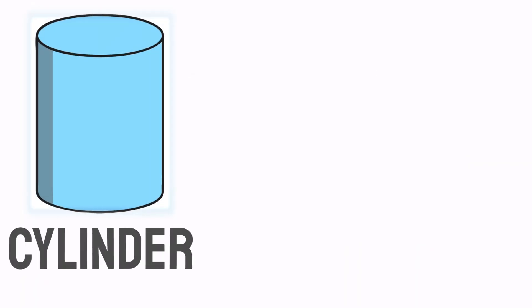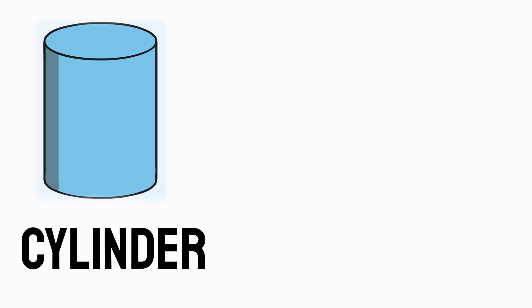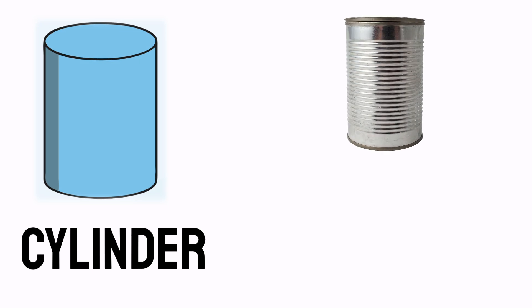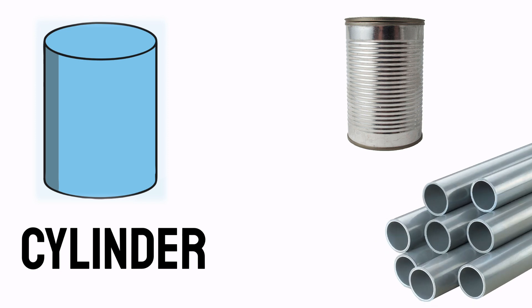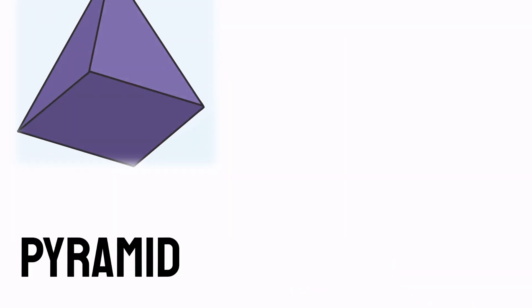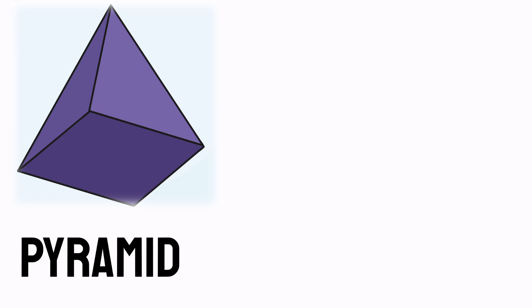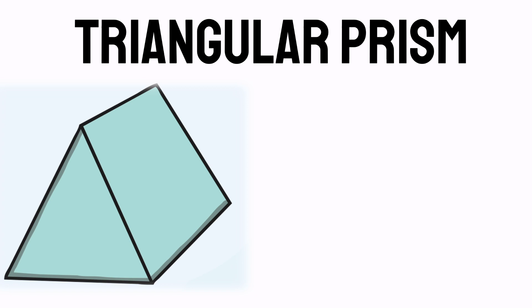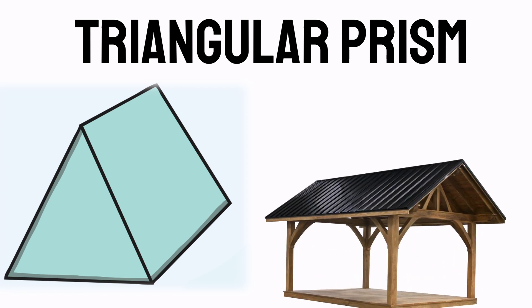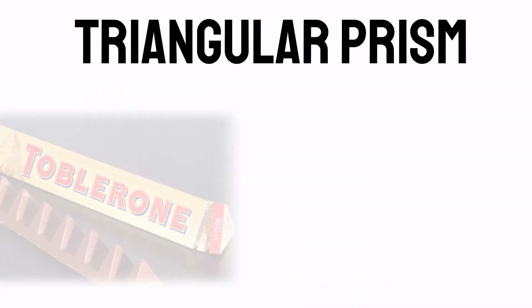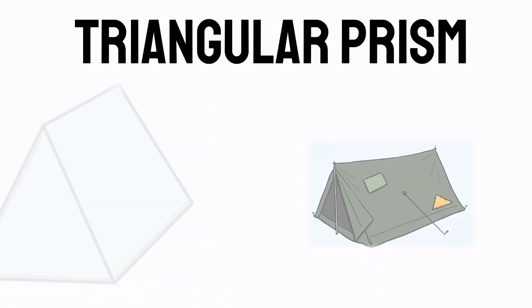Yummy! We also have cylinder. Cylinder looks just like a tin can, a pipe, and a glass. Next, we have the pyramid. A pyramid has a base or a bottom part of a rectangle, and the sides are usually triangles. A great example of this is the Pyramid of Egypt. How about this one? Triangular prism. Have you ever heard of this 3D shape? It looks like a roof of a house, a box of tubular chocolate, and a tent.